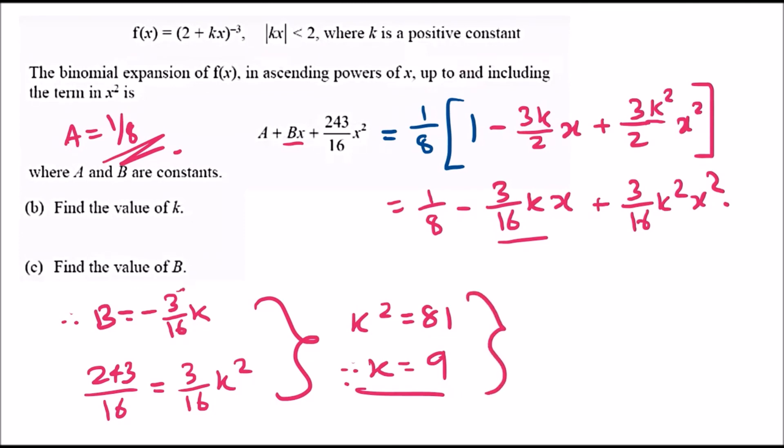Putting k equals 9 into the B equation, B equals -3/16 times 9, which gives -27/16. That's it! I hope this video helped. Let me know if you have any questions, otherwise let's move to the next question.